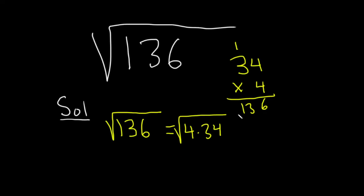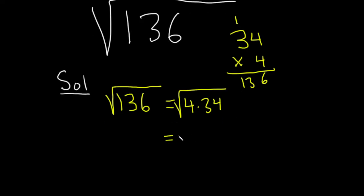And then we can break this up into two square roots. This is the square root of 4 times the square root of 34.